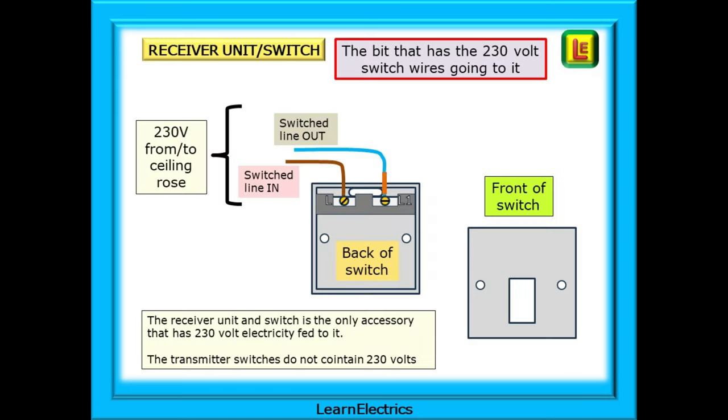Looking now at kinetic switches, how are they going to work? We should start with the receiver unit which may or may not include a switch as well. As these are light switches in this example, it will make sense to talk about a combined receiver and switch accessory. This is the bit that has the 230 volt switch wires going to it. We don't need a neutral, just connect the incoming and outgoing switch wires into the back of the switch.